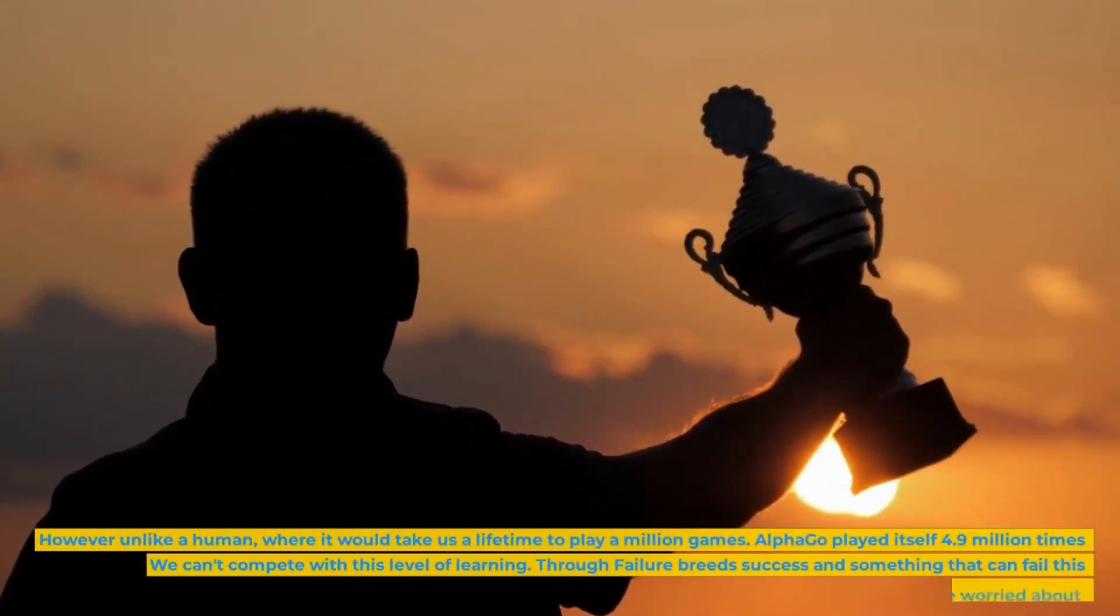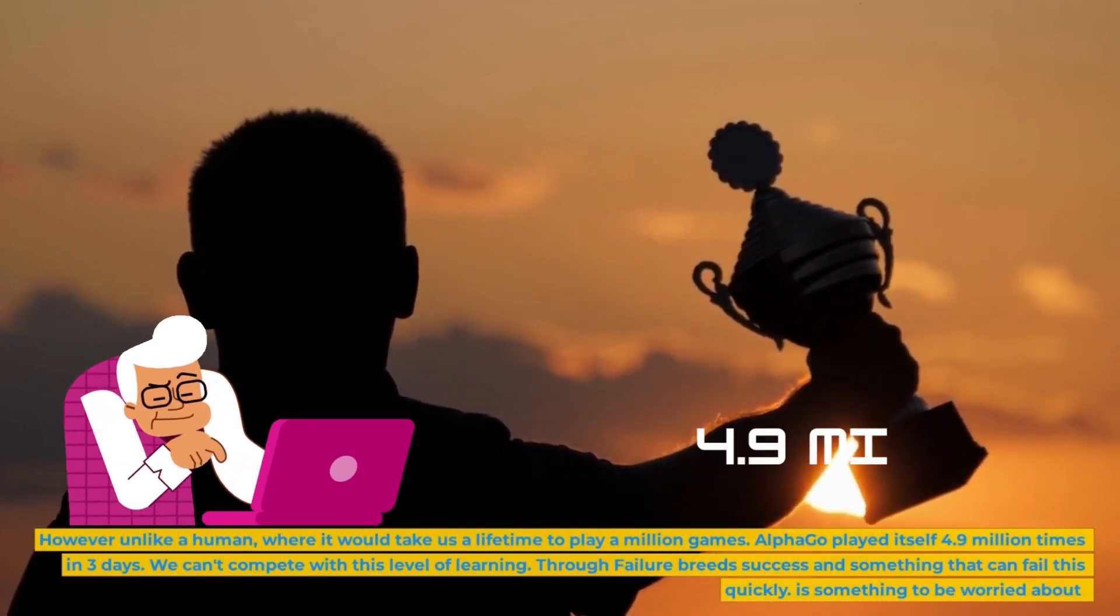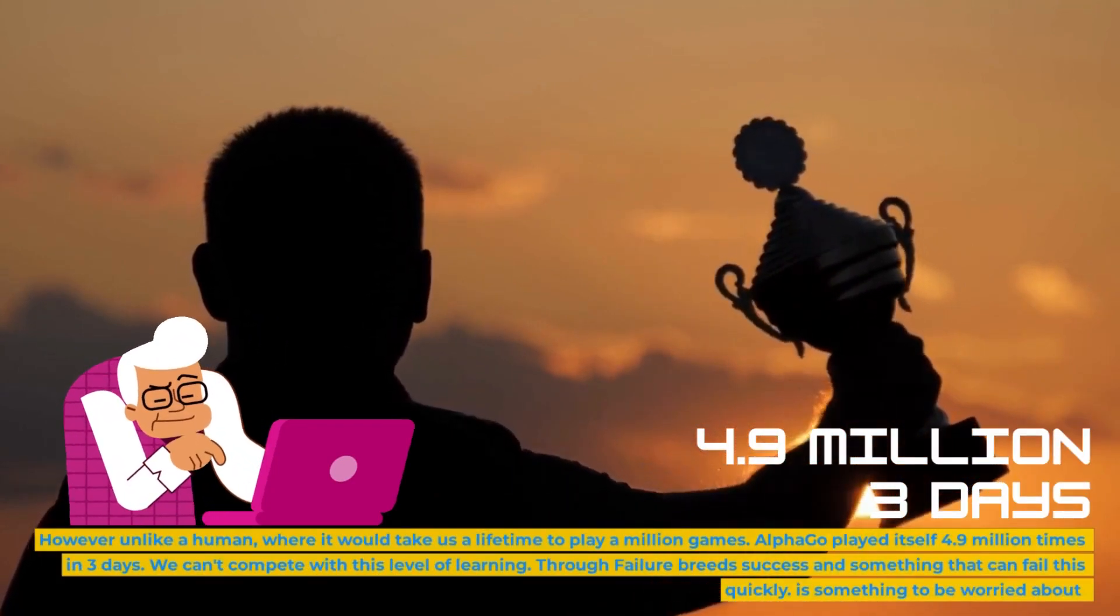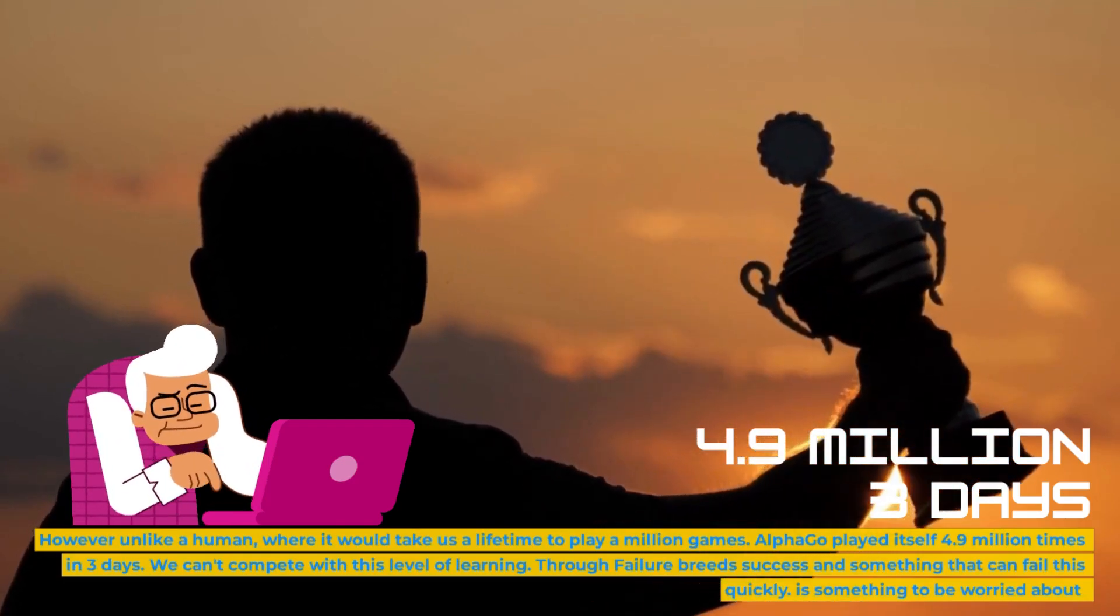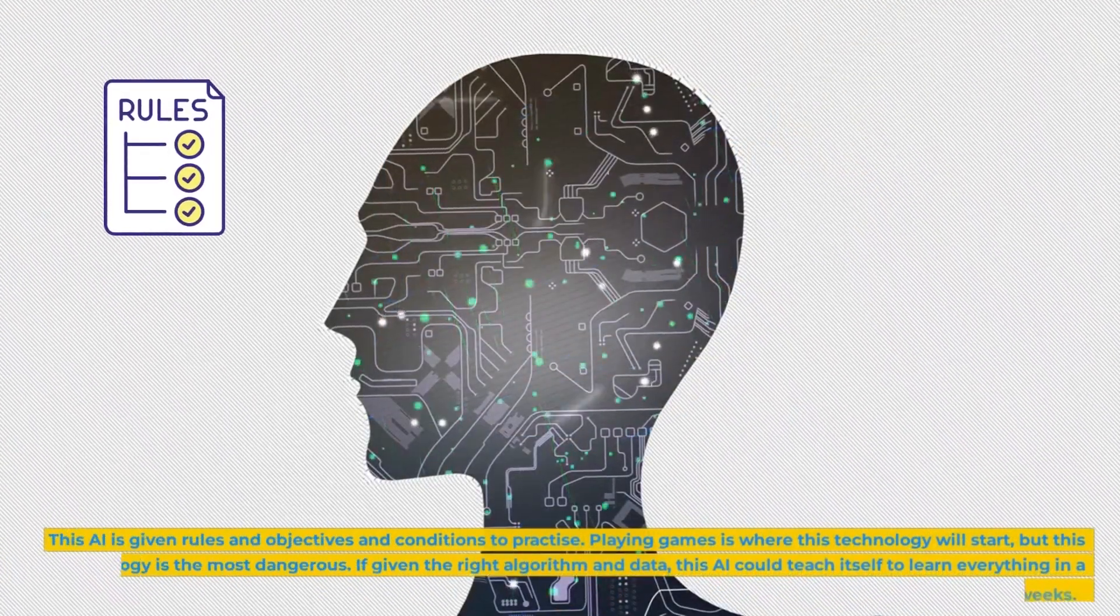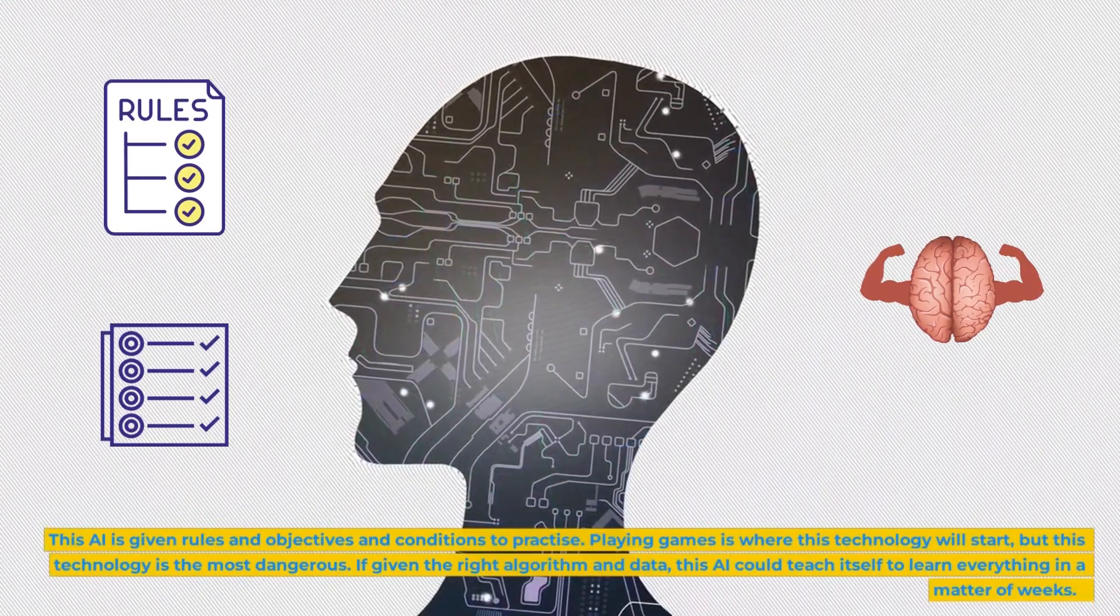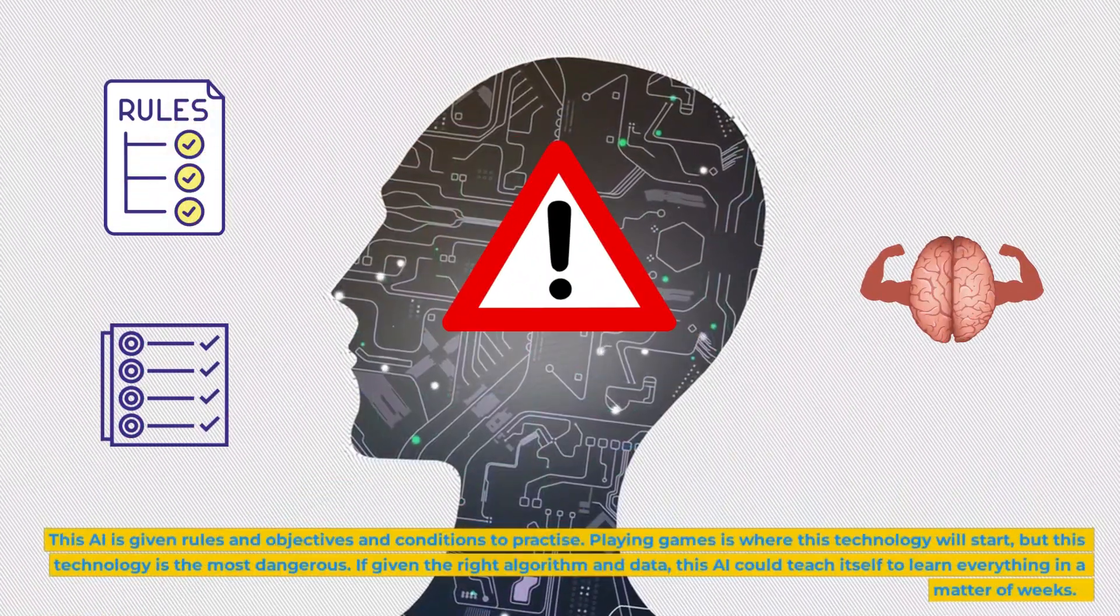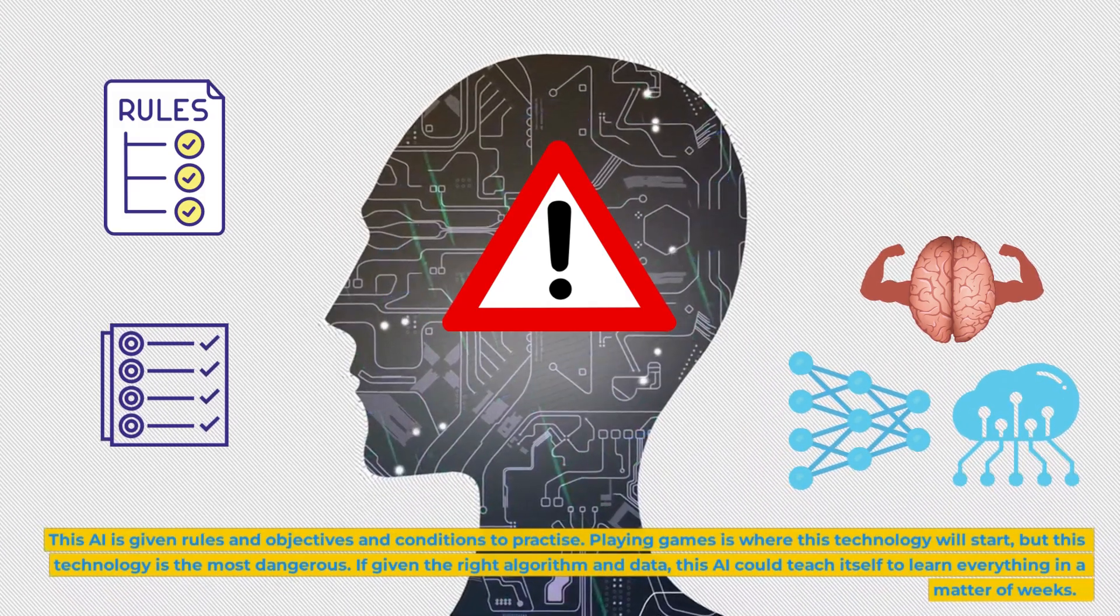However, unlike a human where it would take us a lifetime to play a million games, AlphaGo played itself 4.9 million times in three days. We can't compete with this level of learning. Through failure breeds success and something that can fail this quickly is something to be worried about. This AI is given rules and objectives and conditions to practice. Playing games is where this technology will start, but this technology is the most dangerous. If given the right algorithm and data, this AI could teach itself to learn everything in a matter of weeks.